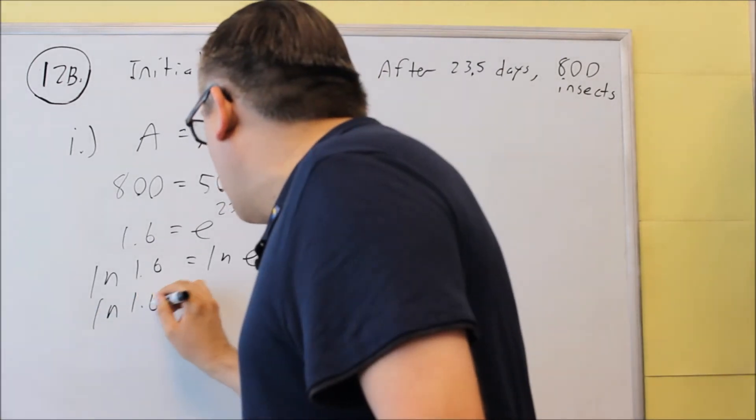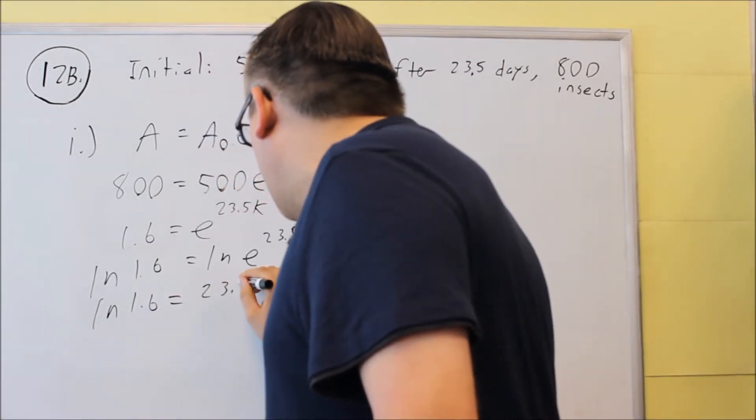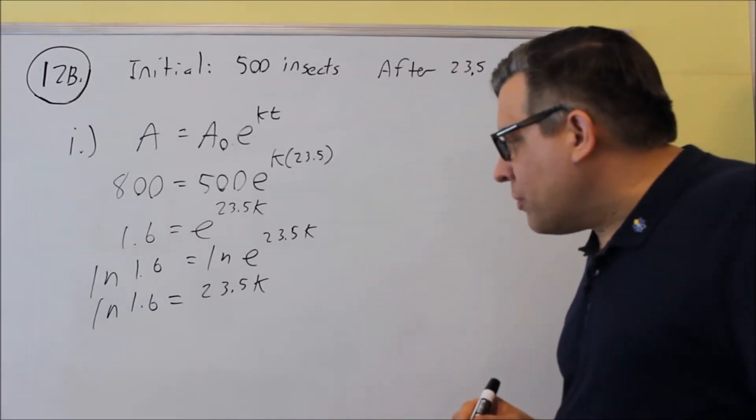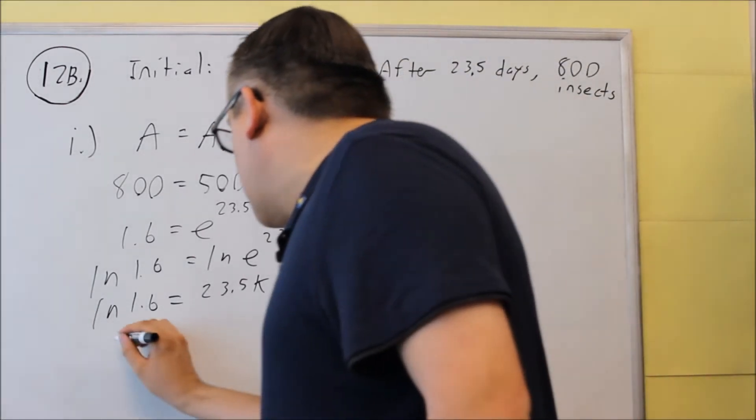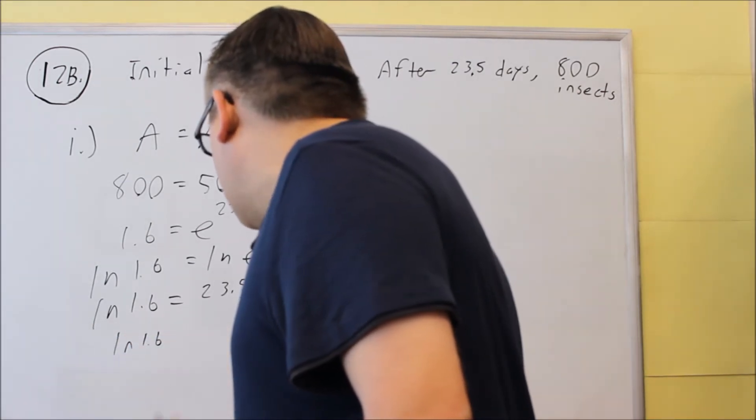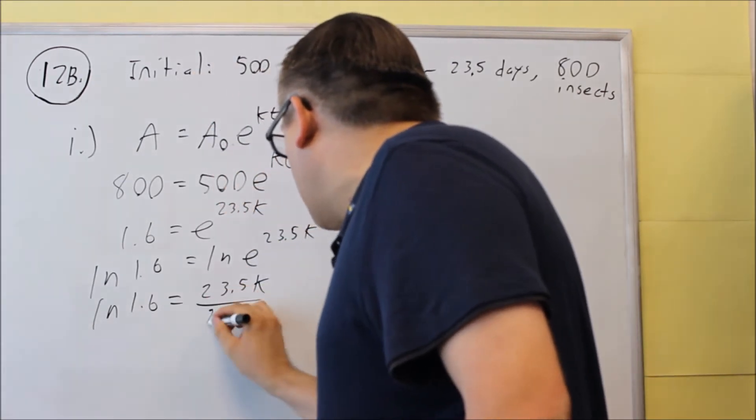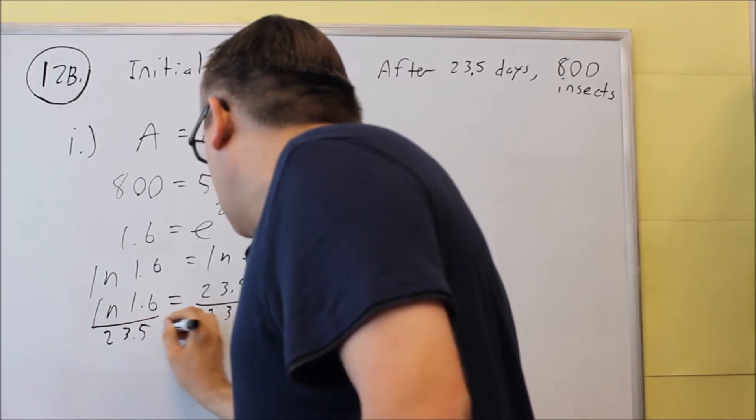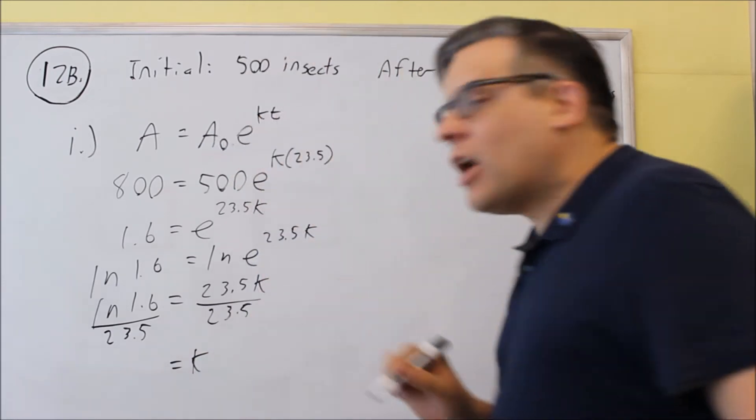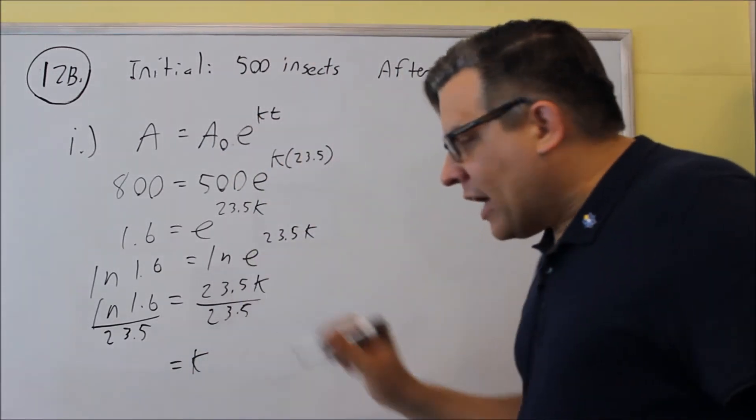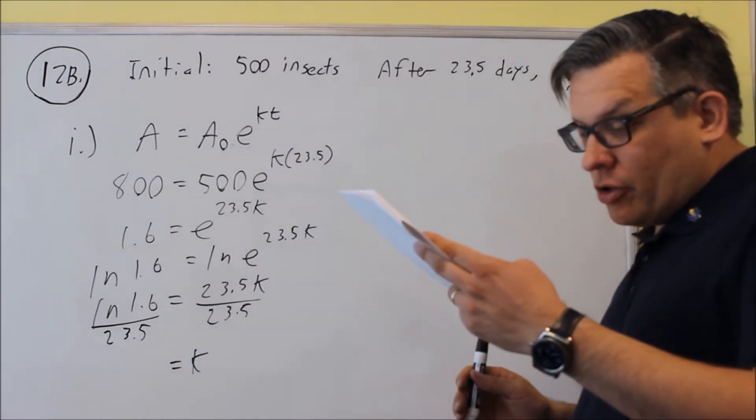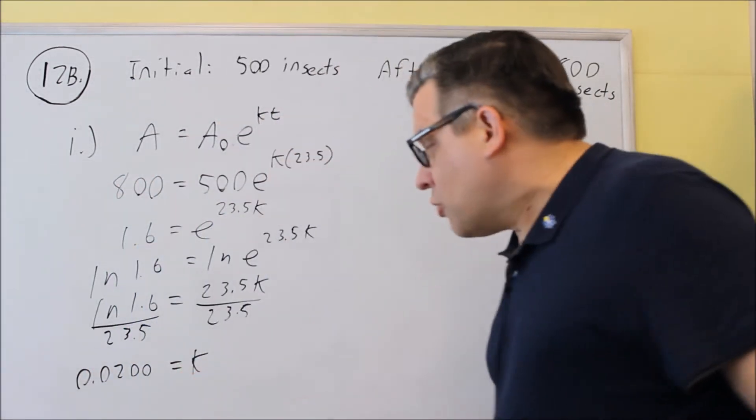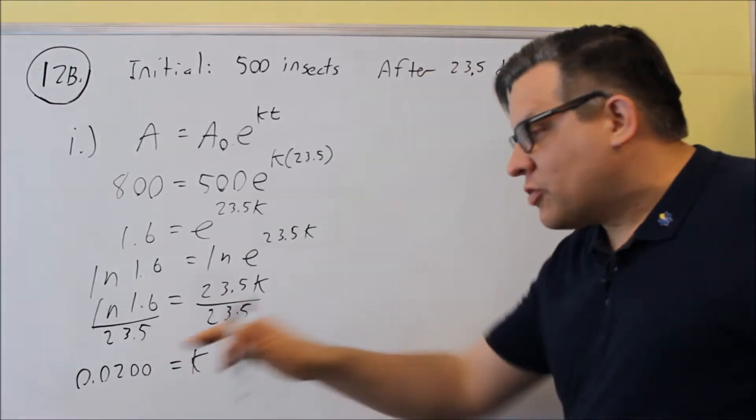So we'll get natural log of 1.6 equals 23.5K, and then we divide both sides by 23.5. And so we'll get ln 1.6 over 23.5, we'll divide both sides by that. And then when we put that in the calculator, once again, you can just round to four places with that one, and when you put that in the calculator, you're going to get 0.0200 with some more decimals around the four places.